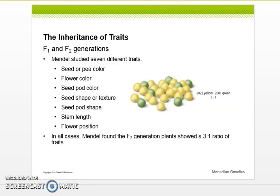Mendel studied seven different traits. He studied seed or pea color, flower color, seed pod color, seed shape or texture, seed pod shape, stem length, flower position. In all cases, Mendel found the F2 generation plants showed the same 3:1 ratio of traits.